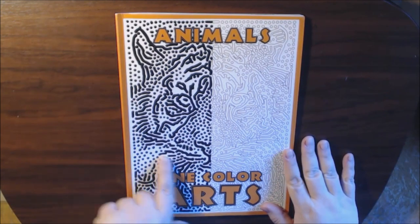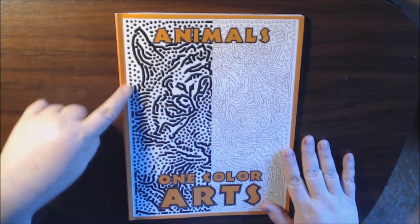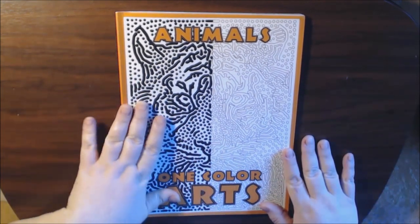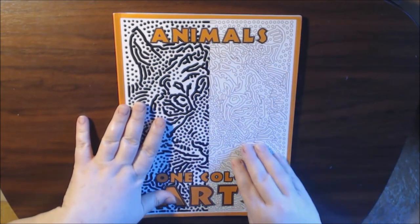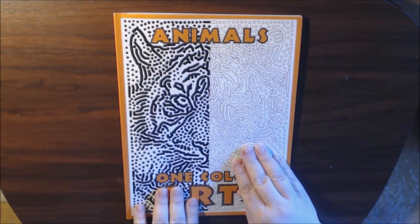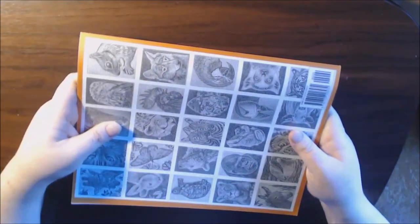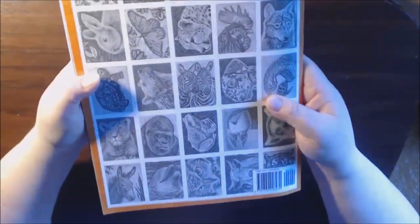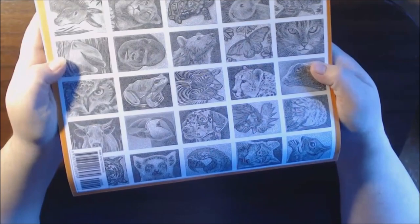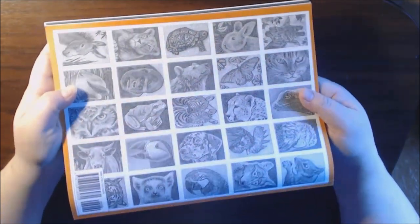This one advises that you use one color to fill in the dots and the lines to create a picture. This is what you'll start with and this is what you'll end up with. The back shows all of the different creatures and animals that they have in the book. There are 25 of them.